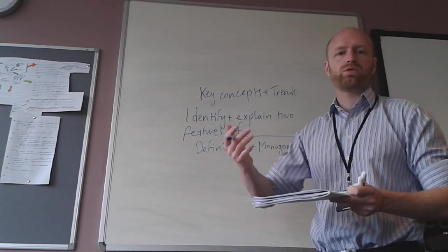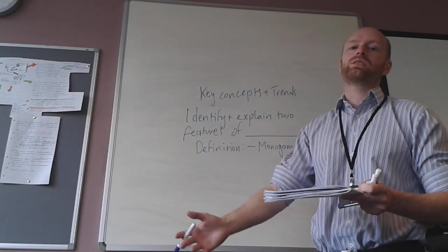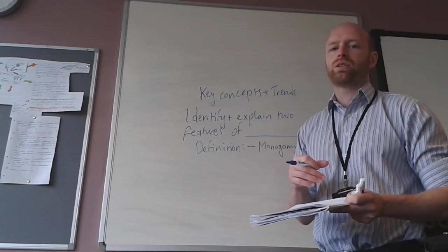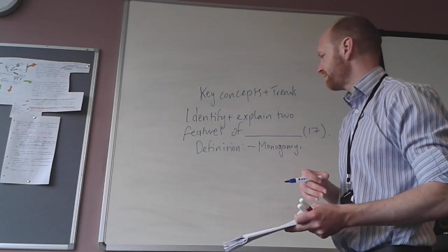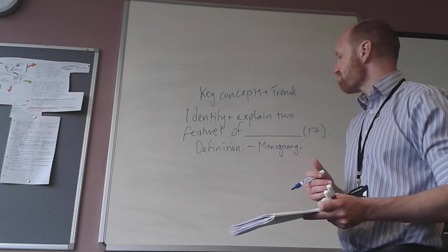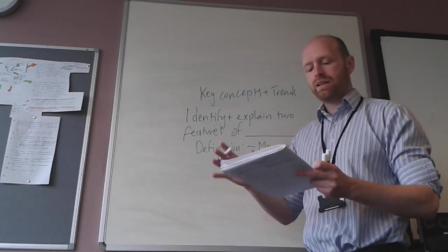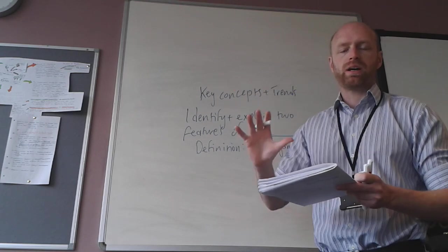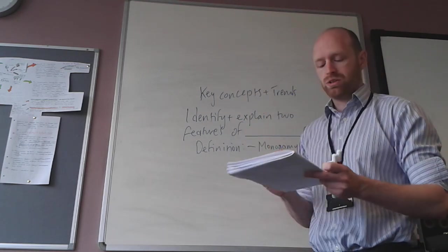So monogamy can be explained from each of the perspectives of the functionalists, the new right, the feminists, post-modernists and Marxists. Okay, so that is a key strategy. Use the definition, take the key words and expand on two of them for that kind of question.